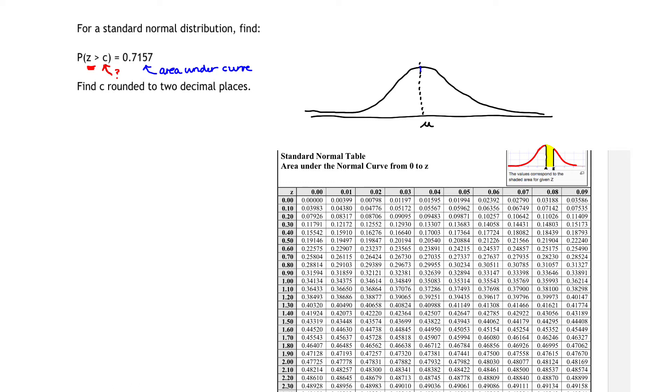If I start here at my perfect symmetry line, my mean, I know that to the right, 50% of the area under the curve is shaded. But I want 71.57%. And so that means I need to get an additional 21.57% of the area under the curve added to that.